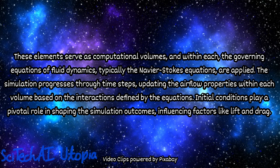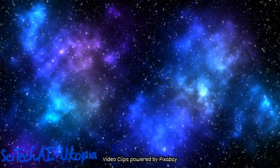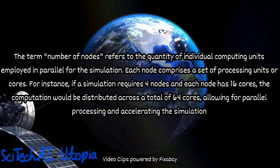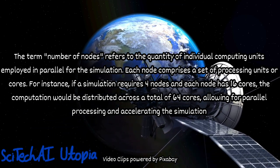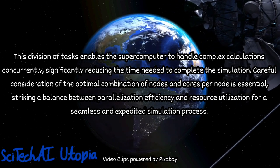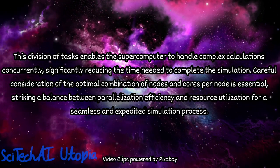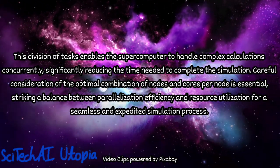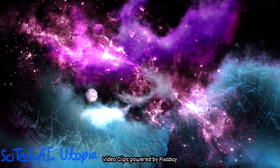Next is execution. Submitting the simulation as a job to the supercomputer involves providing detailed information to the scheduler. This includes specifying the required computational resources such as number of nodes, cores per node, and expected run time, and any dependencies on external libraries. Job scheduling ensures efficient resource utilization on the supercomputer. During execution, the progress of the simulation is closely monitored. This involves tracking computational performance metrics, checking for errors, and ensuring that the simulation progresses as expected. Visualization tools may be employed to monitor the evolving airflow patterns in real-time or through periodic checkpoints.